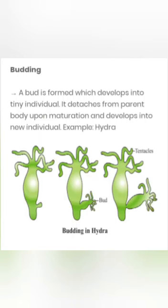Budding. A bud is a small protrusion which is formed on the parent individual. This bud later develops into a tiny individual. This tiny individual detaches from the parent body upon maturation and develops into a new individual. For example, Hydra.